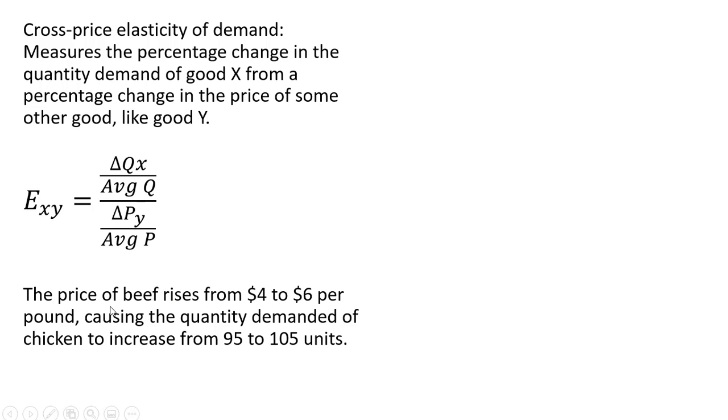Here's a numerical example. The price of beef rises from $4 to $6, so that'll be our change in P. Our change in P here will be just 6 minus 4, or a $2 increase, causing the quantity demanded of chicken to increase from 95 to 105 units. So let's use this formula then.